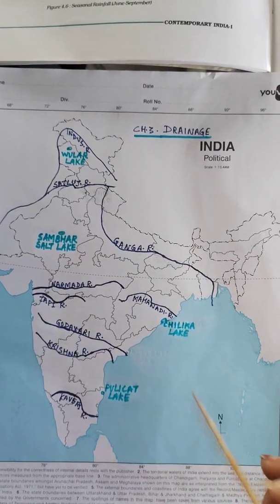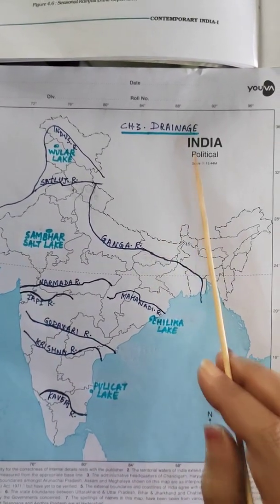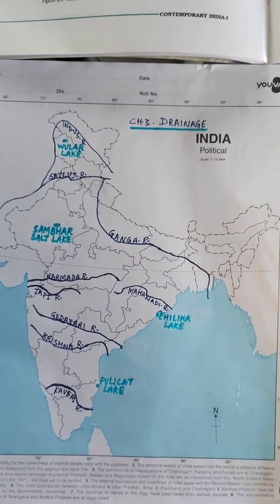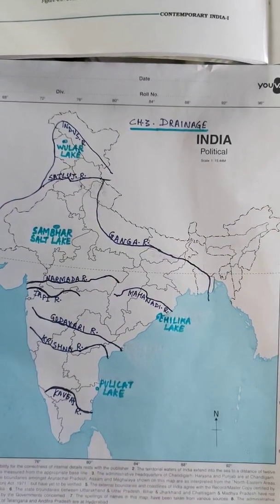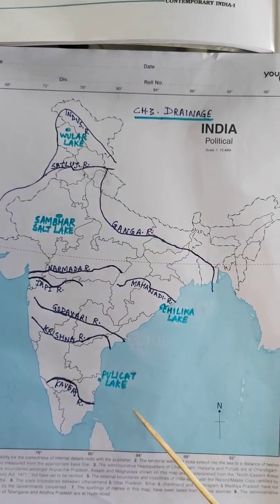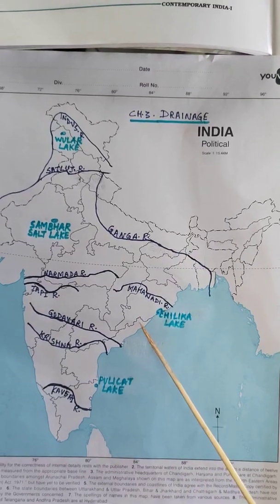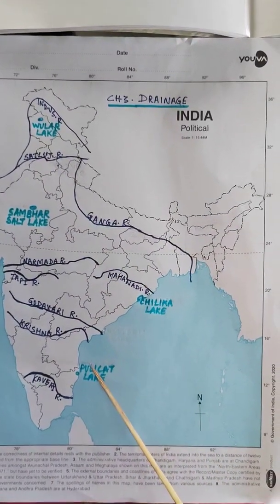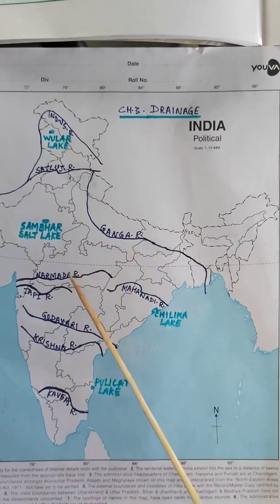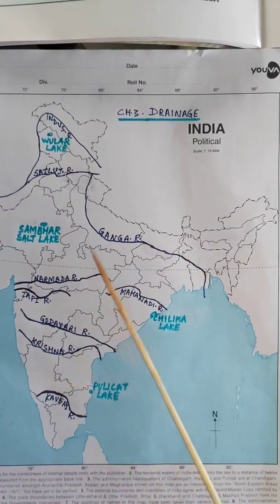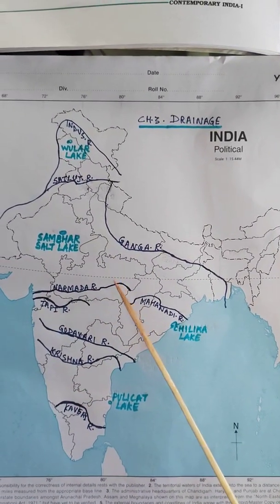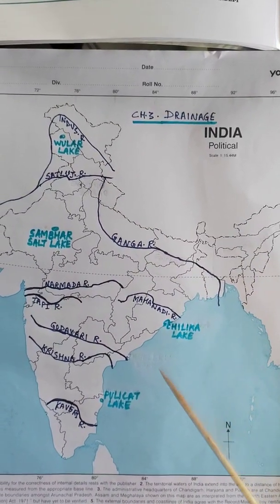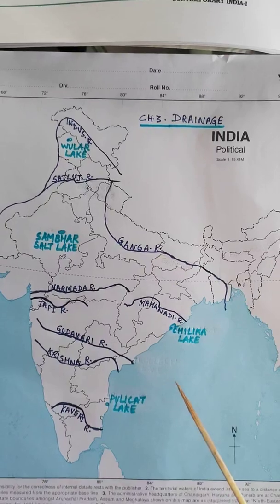Let me start from the geography chapter 3 - Drainage. This chapter is not there in the syllabus from the theory point of view; only the map work is there, and that too only for identification. Some of the lakes are marked with a light blue colour and some are rivers. In your question paper a river may be marked as A, B, or C and you will be asked to identify or name the river.